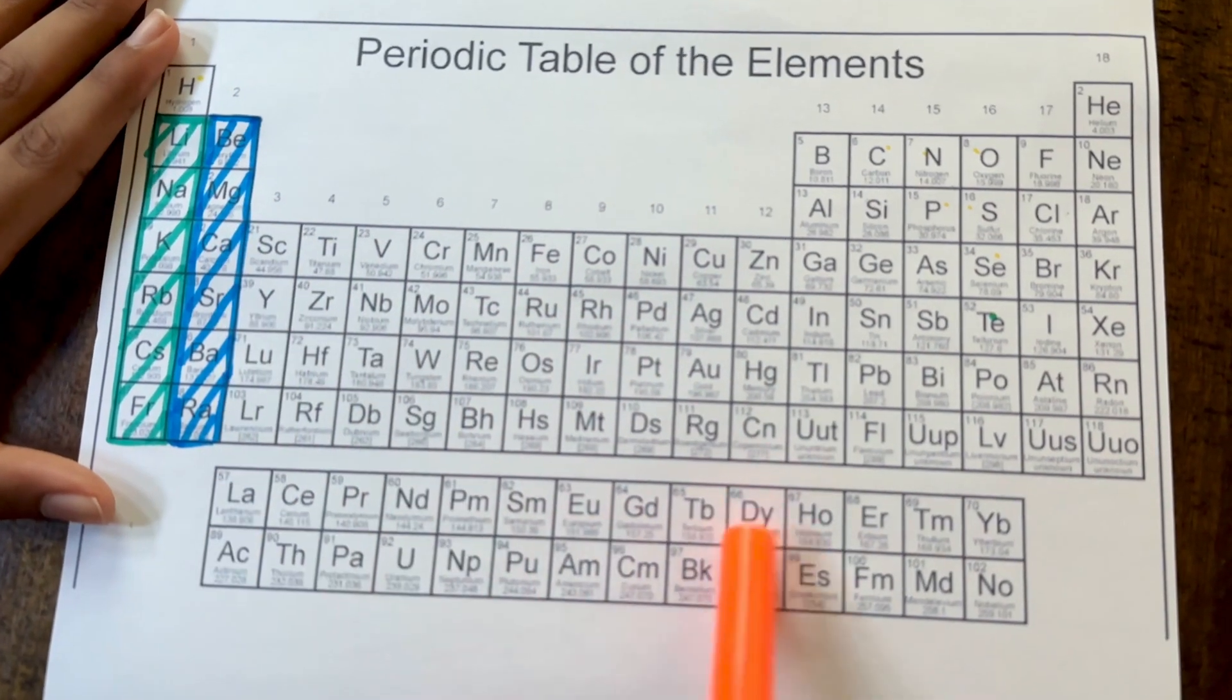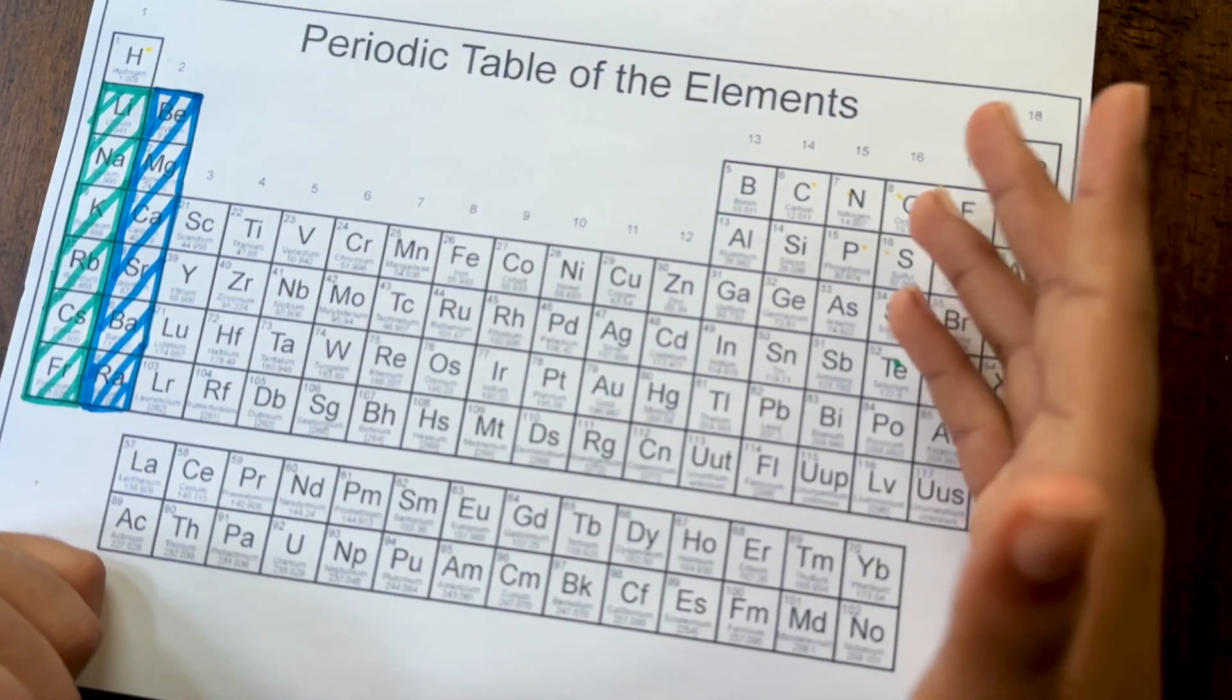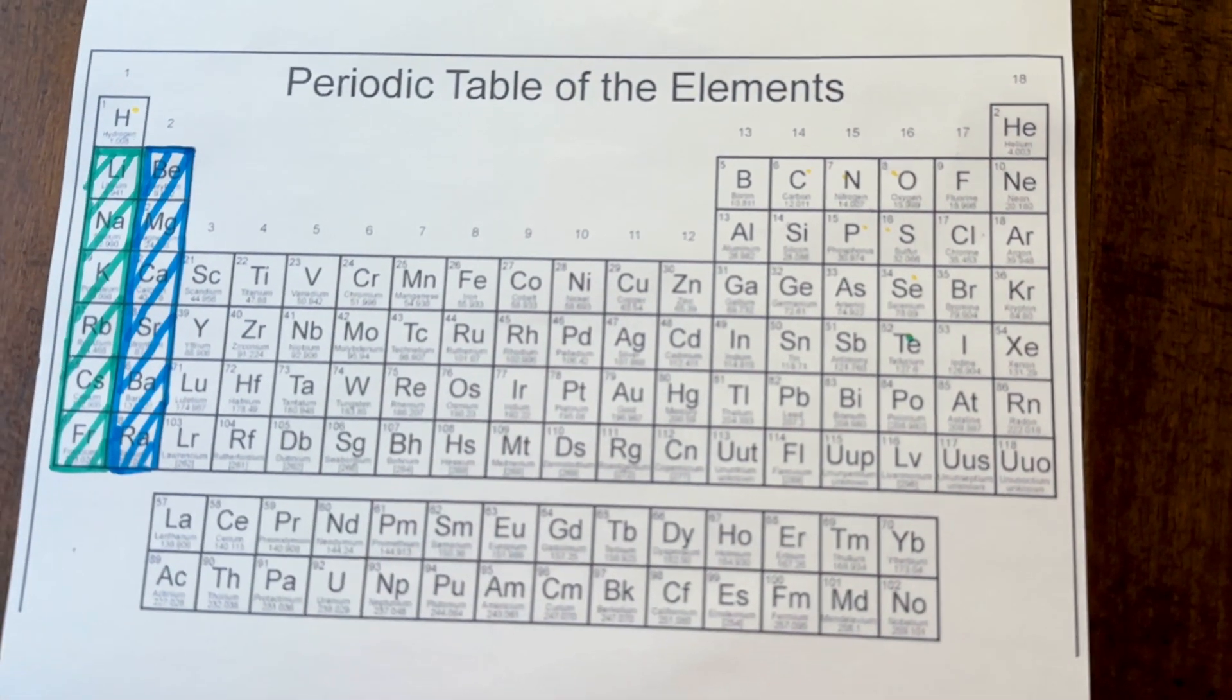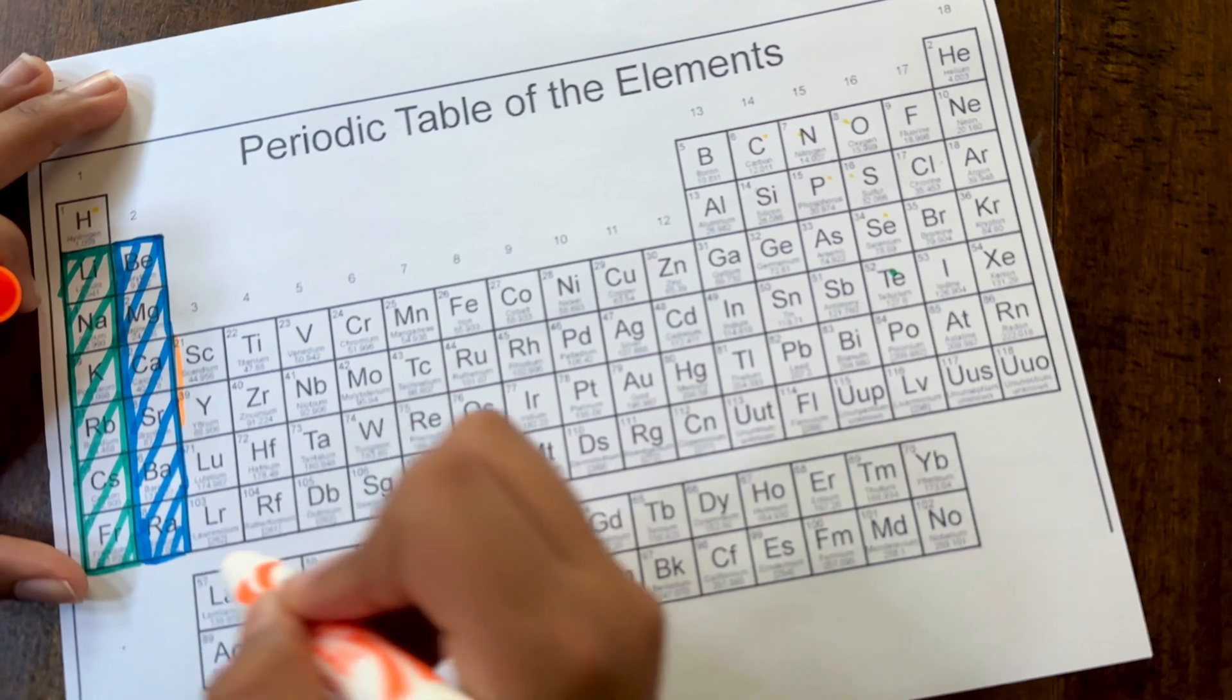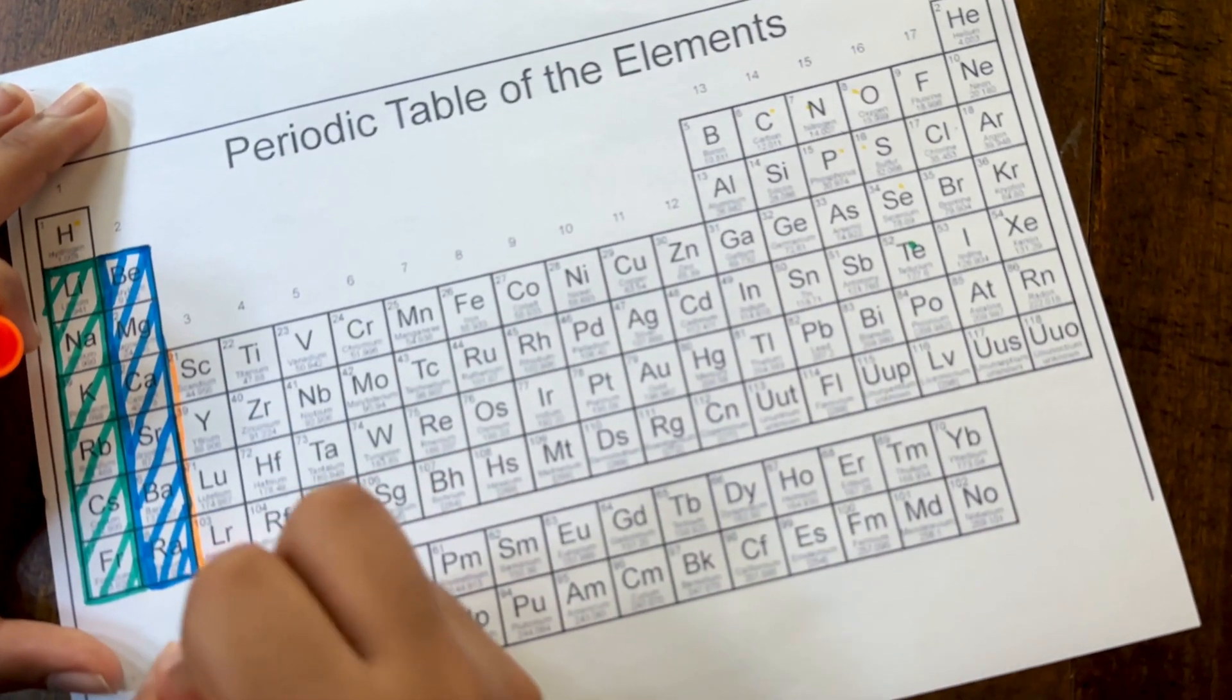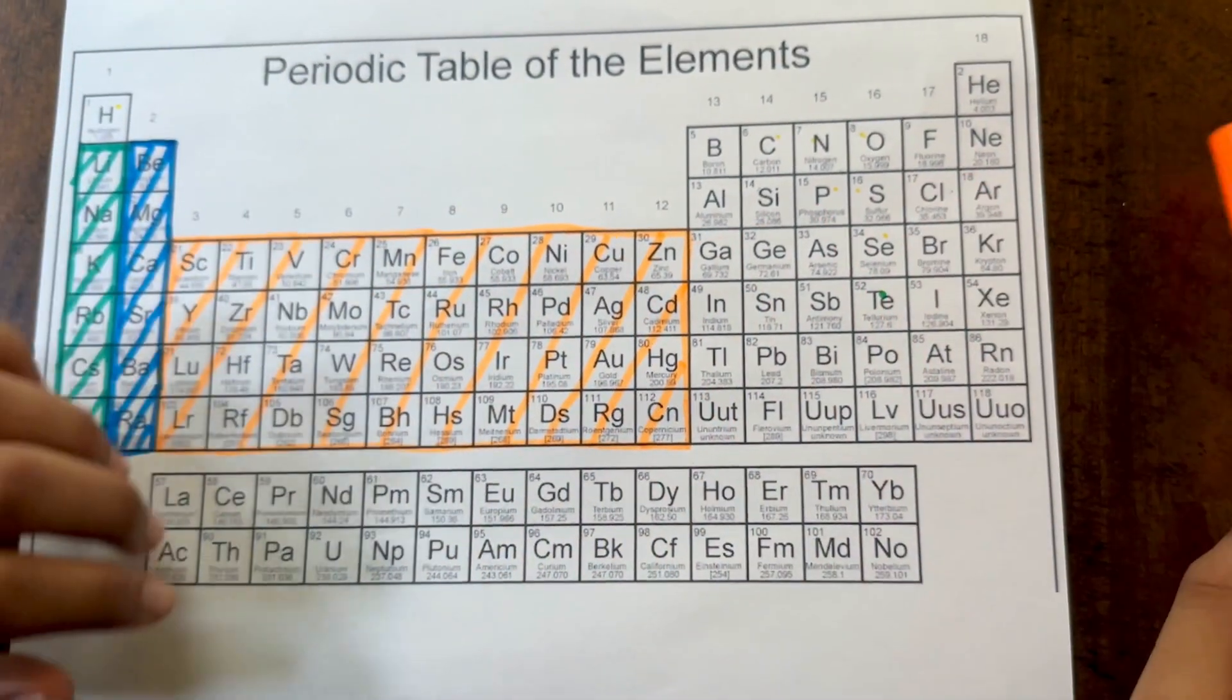These transition metals typically react with other reactive non-metals, and they create a lot of substances together. I'm just going to highlight it. There's also lanthanides and actinides, which I'll get into. These are the transition metals.